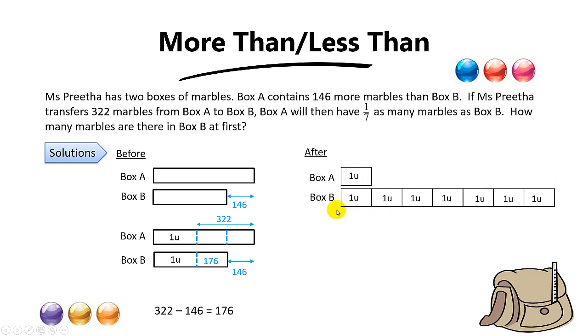And now can you find the total from here to here to here? The answer is 322 plus 176. Do you know why? Because when this 322 goes over to Box B, this 322 plus 176 will form these six units over here.